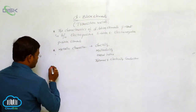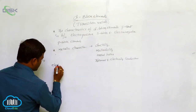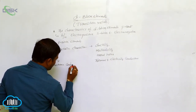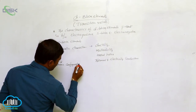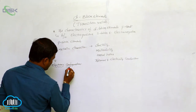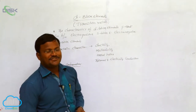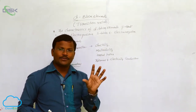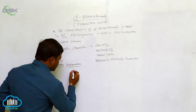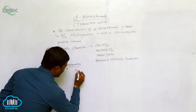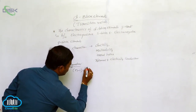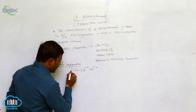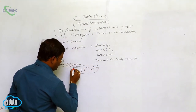Now let us look at electron configuration. The most important phenomenon in case of D block elements is electron configuration. We have to know the general electron configuration first, which we can apply to all the elements. The general electron configuration is: (n-1)d¹⁻¹⁰ ns¹⁻².